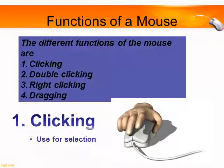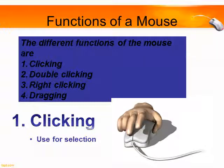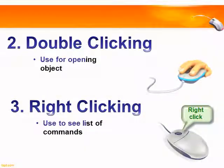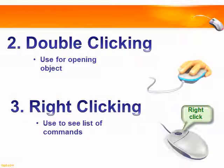There are four functions of a mouse: clicking, double clicking, right clicking, and dragging. Clicking — when we press the left button of the mouse once and release it, that makes a click sound; this is called clicking. A click is used to select an object on the monitor. Double clicking — pressing the left mouse button twice without stopping and releasing is called double clicking; it is used for opening any object or file on the computer.